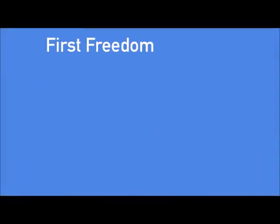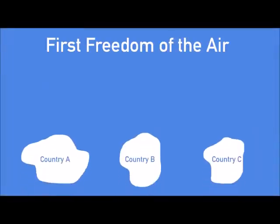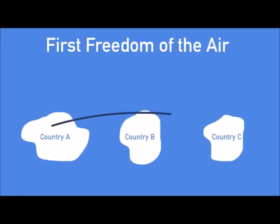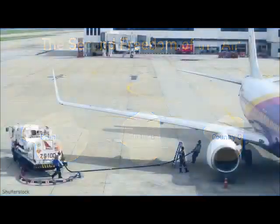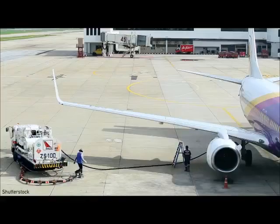The first freedom of the air is the right to fly over a foreign country without landing. Pretty much every commercial flight and commercial airline is allowed to do this. The second freedom of the air is the right for airlines to land in foreign countries for technical stops — essentially, that means refueling.